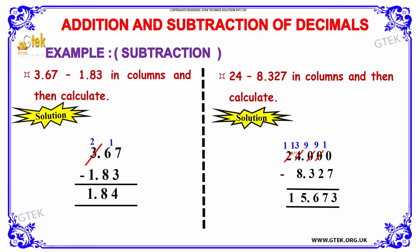Since the digit was 3, we borrow 1 from the previous term. When we borrow, 2 becomes 1 and we get 1 here, making the term 13. 13 minus 8 gives 5. So the answer is 15.673.